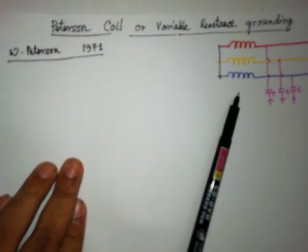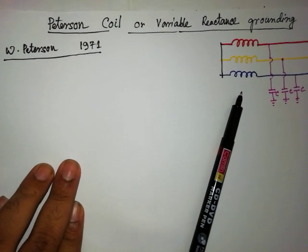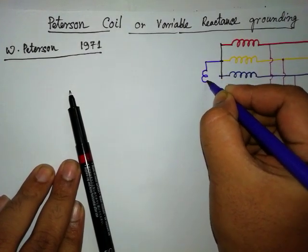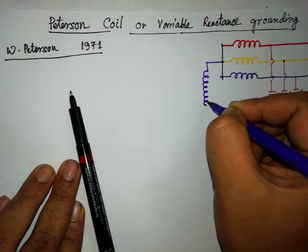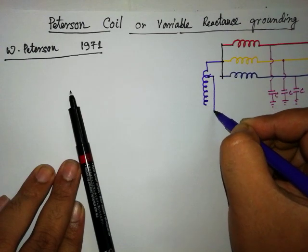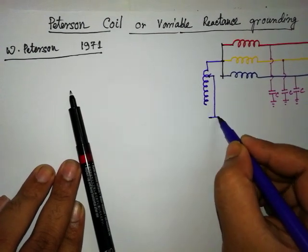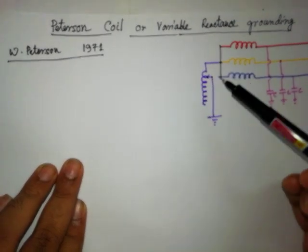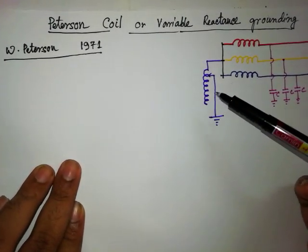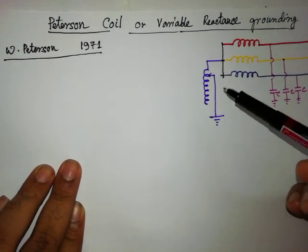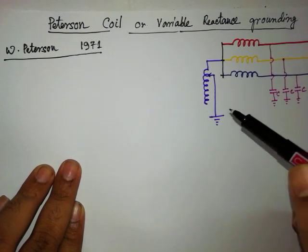What is the main motto? In a Peterson coil, we'll use a variable reactance — we can use tapping also, or a jockey. The inductance of the Peterson coil is selected or adjusted at such a value which causes the inductive current to exactly nullify the capacitive current.